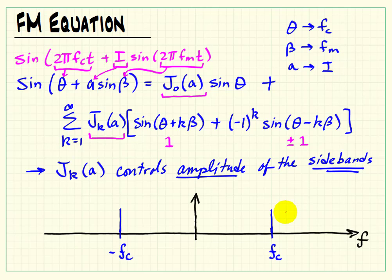Let me actually focus on this one, the theta plus k beta. So if we say that k equals 1, that would give us theta plus beta, or fc plus fm. And that's the position of that spectral component.